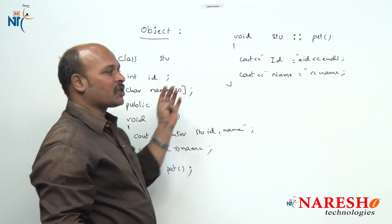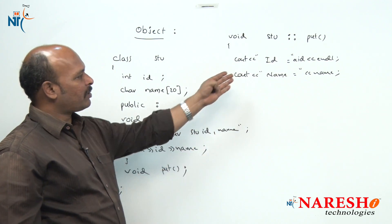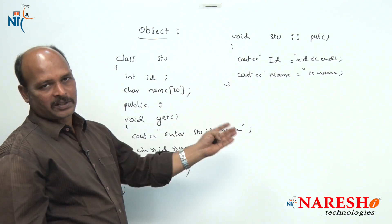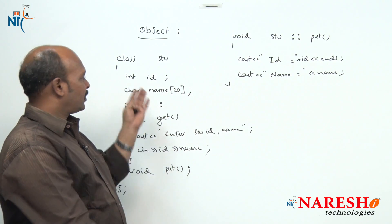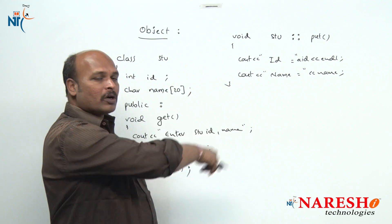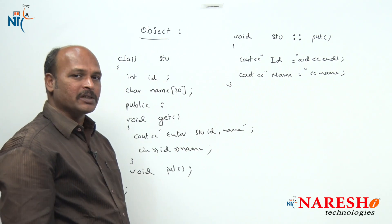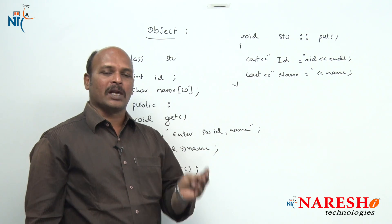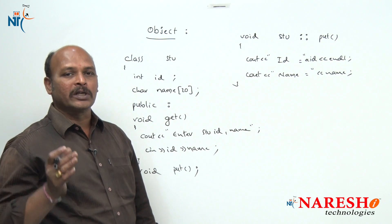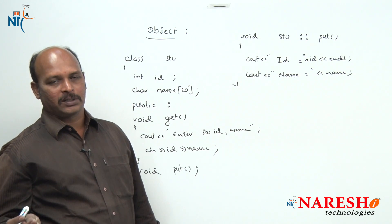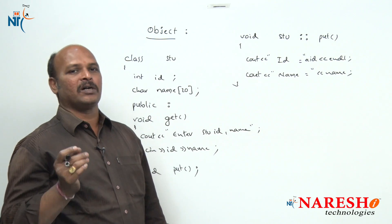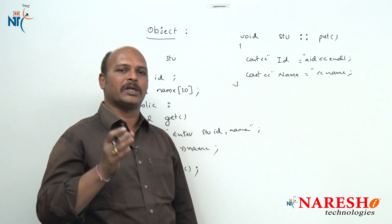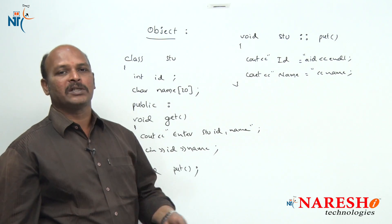Now the class is created, data members are ready, and member functions are also ready. The remaining topic is how to call the member functions or access the class members. To access the class members, we must declare objects, because an object is the class variable and only when objects are defined is memory allocated.